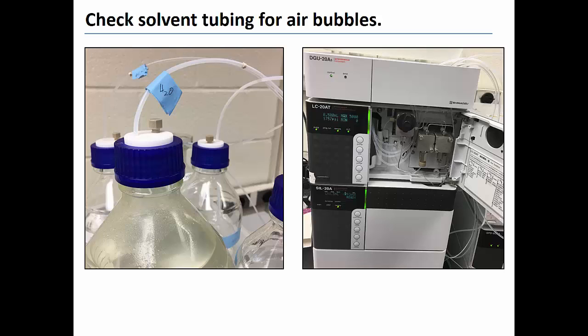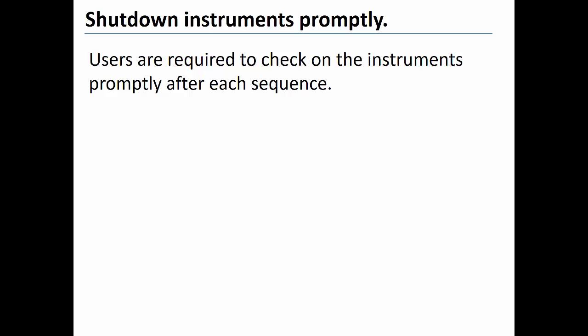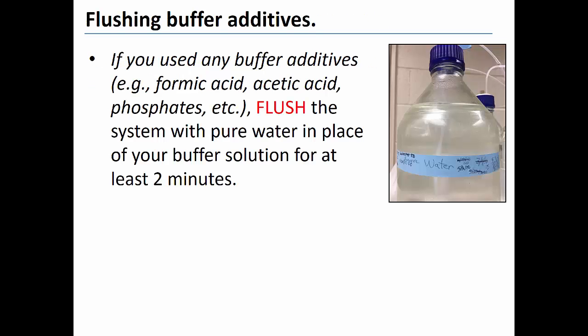It is the responsibility of individual users to ensure that the instrument is properly and promptly shut down at the conclusion of each batch. Users should estimate the total time it will take the instrument to process their entire batch and then check on the instrument promptly at or near the end of the analysis. If your method includes a mobile phase with a buffer additive such as formic acid, acetic acid or phosphate salts, you must flush the system with pure water in place of the buffer solution at the end of each batch for at least 2 minutes.